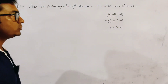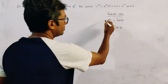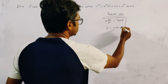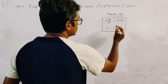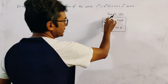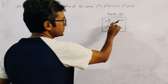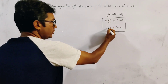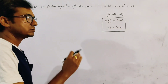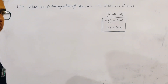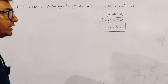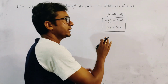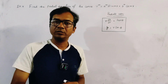Here we use two important results of differential calculus. The first one is r·dθ/dr, this is equal to tan(φ), and the second is p — small p — this is equal to r·sin(φ). These two relations we already proved in an earlier lecture.